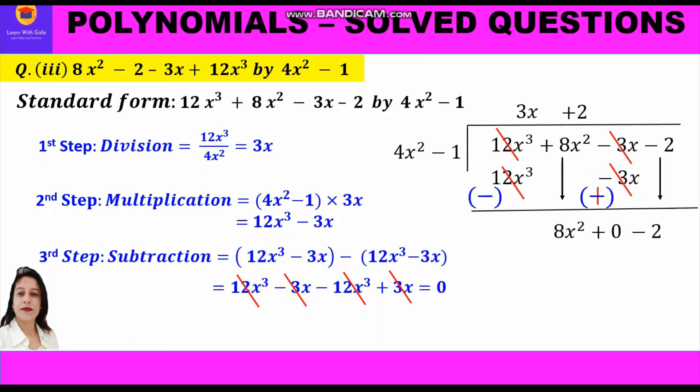We are left with zero. We bring down the two remaining terms from the dividend — 8x² and minus 2 — and start the three steps all over again. What should be multiplied to 4x² to get 8x²? The answer is 2.